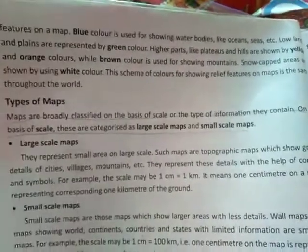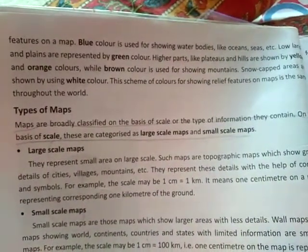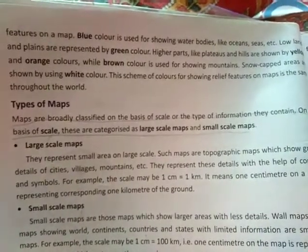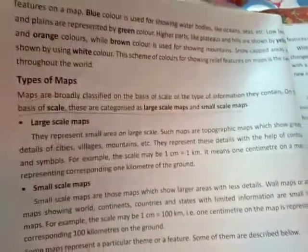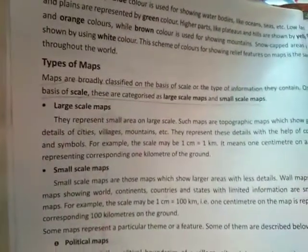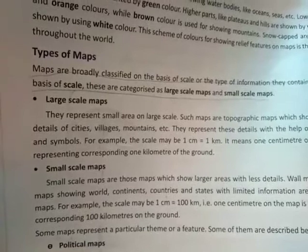Higher parts like plateaus and hills are shown by yellow and orange colors, while brown color is used for showing mountains. Snow-capped areas are shown using white color. The color scheme for showing relief features is the same throughout the world, just like conventional symbols. However, when you fill maps in class, it is now compulsory to fill the map only with a lead pencil — you are not supposed to use colors in your map.